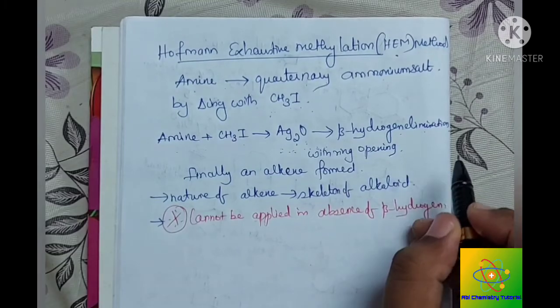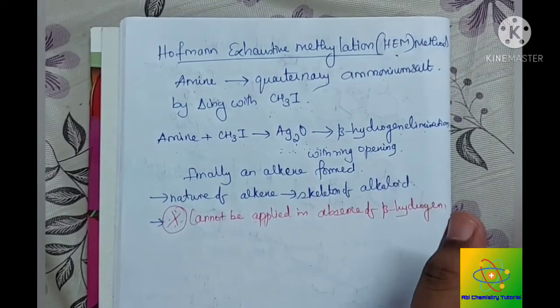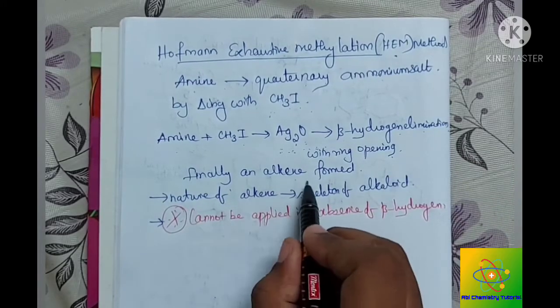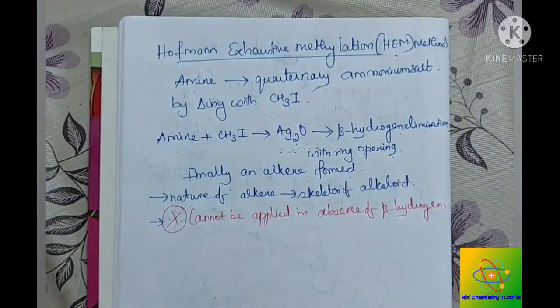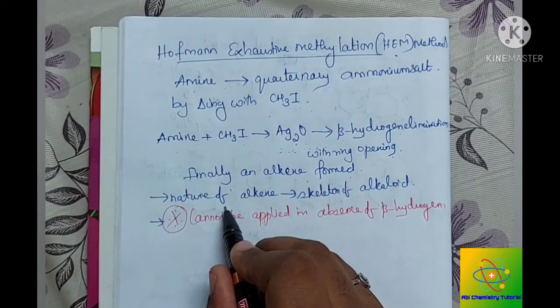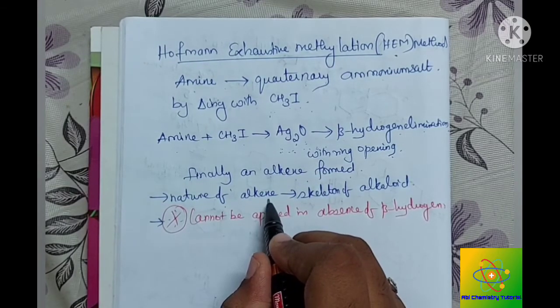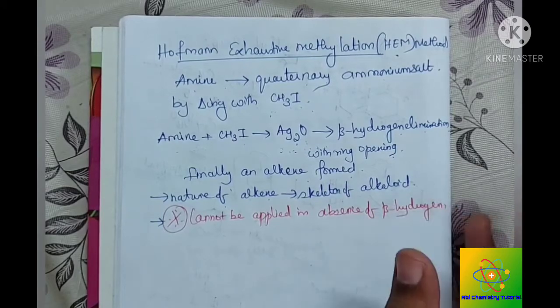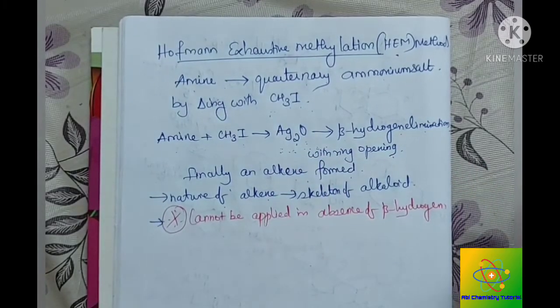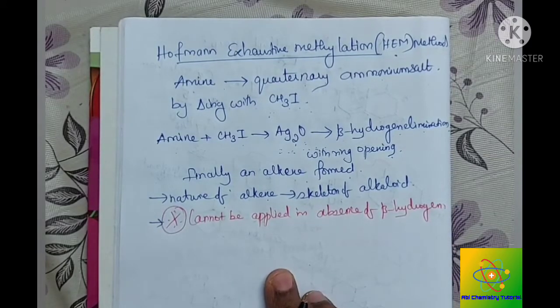By leaving water and also the ring opens by the elimination of beta hydrogen, finally an alkene is formed. This process is repeated again and again. Using the nature of the alkene finally formed, the skeleton of the alkaloid can be defined.